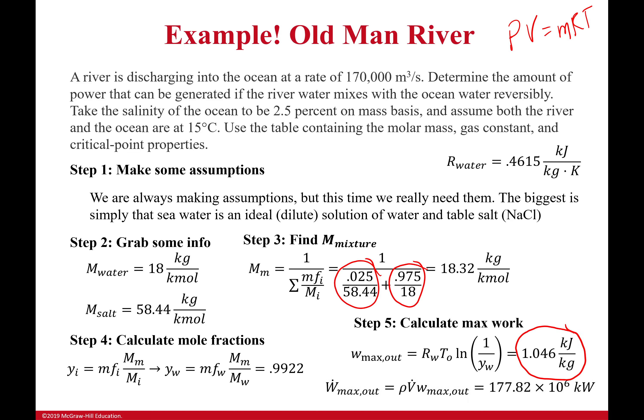If I want to find an absolute power out, it's going to be equal to the density of the water, which is just a thousand, times the volumetric flow rate, which is given in the problem statement, times the max work out, which is 1.046 kilojoules per kilogram, which comes out to be 177,820,000 kilowatts. It's a lot. It's why we use hydrostatic generators.